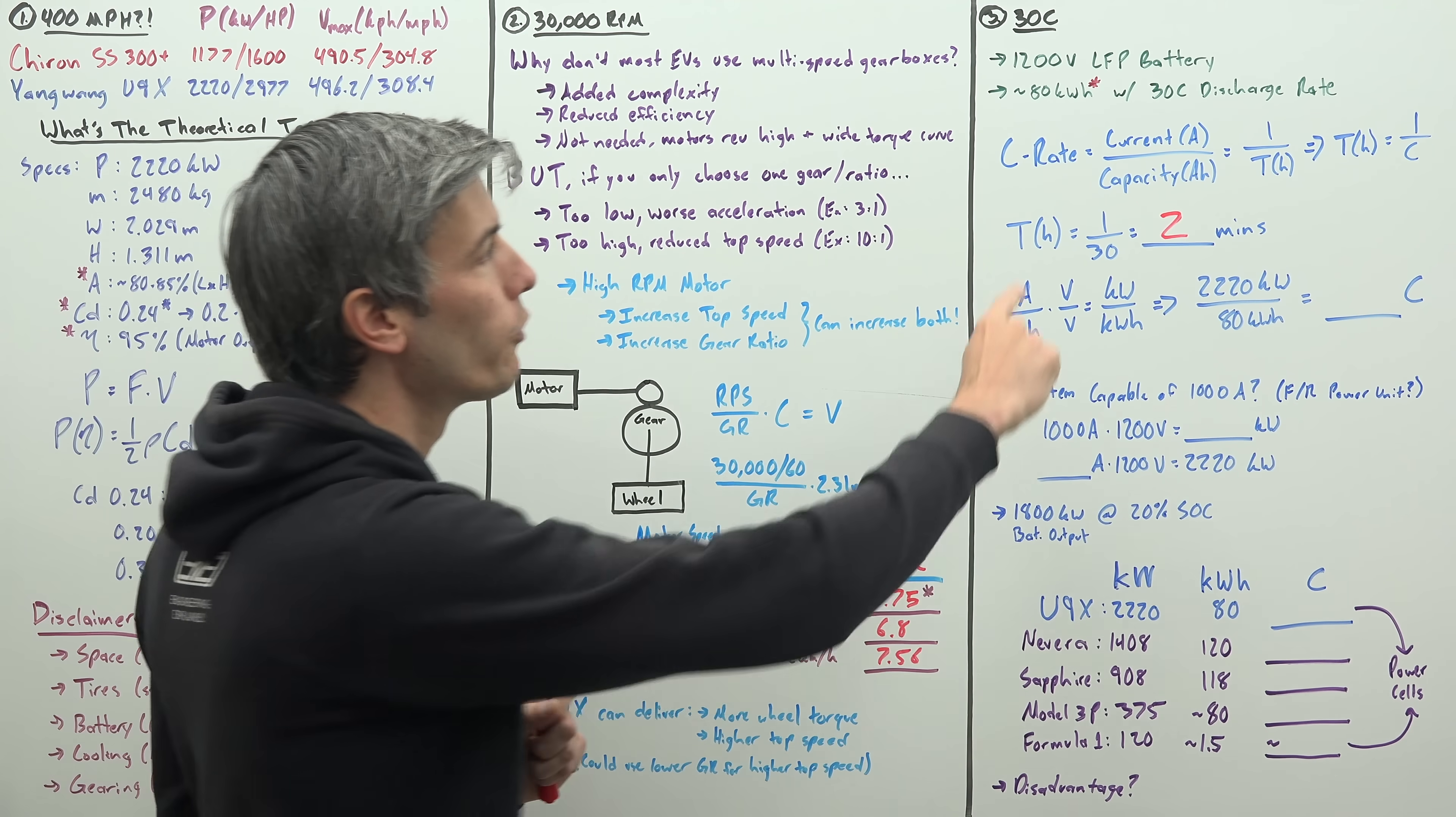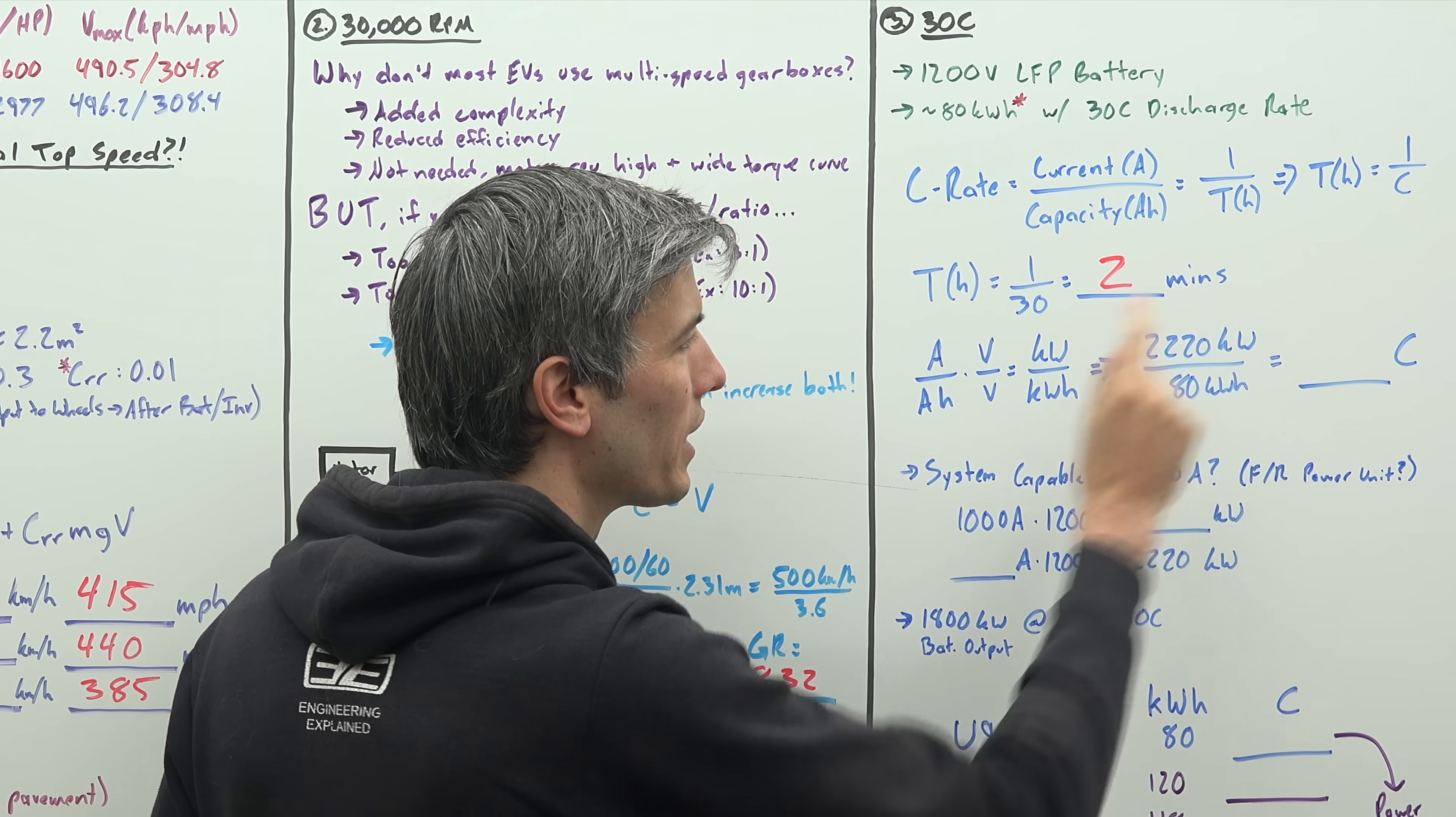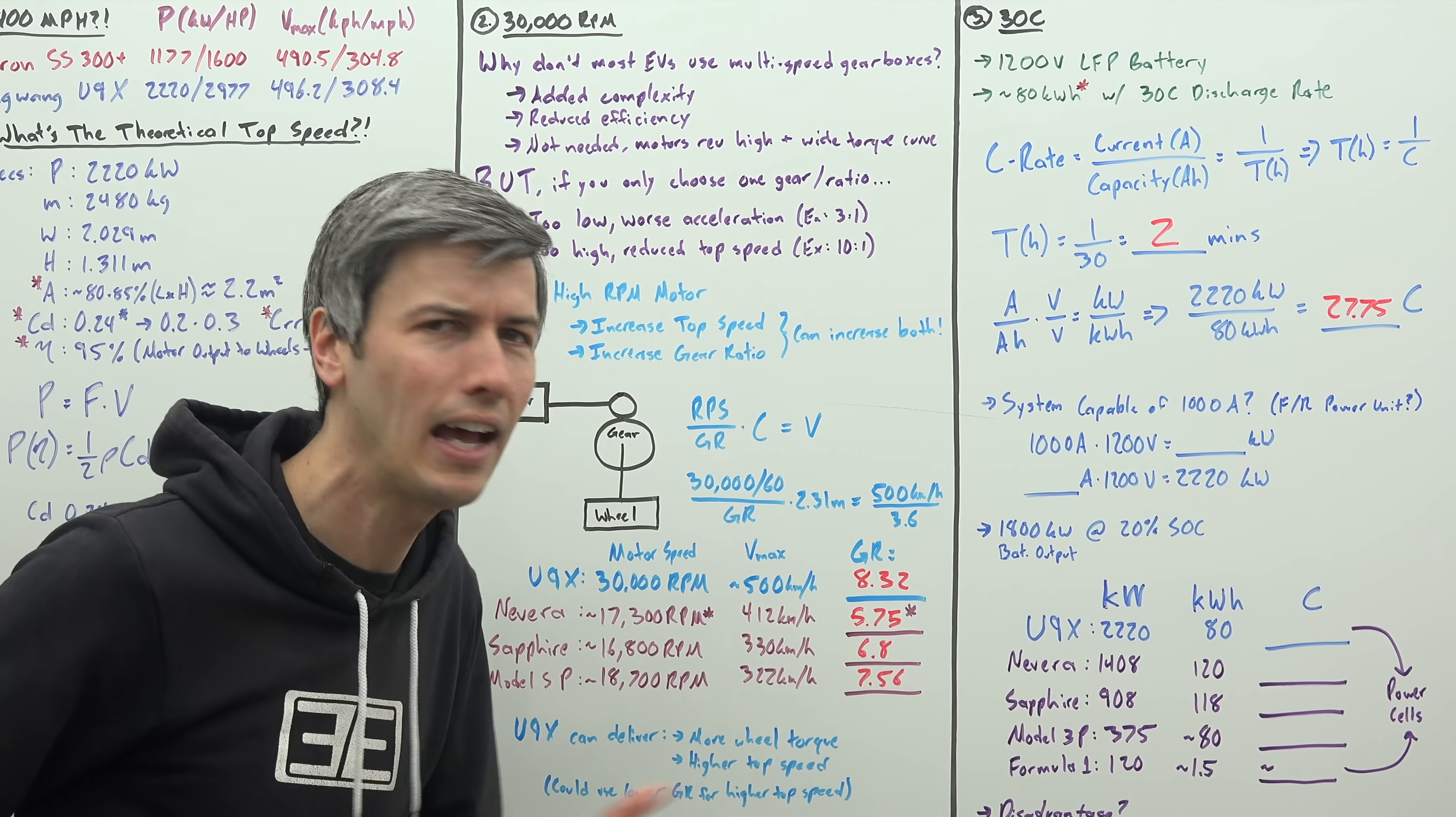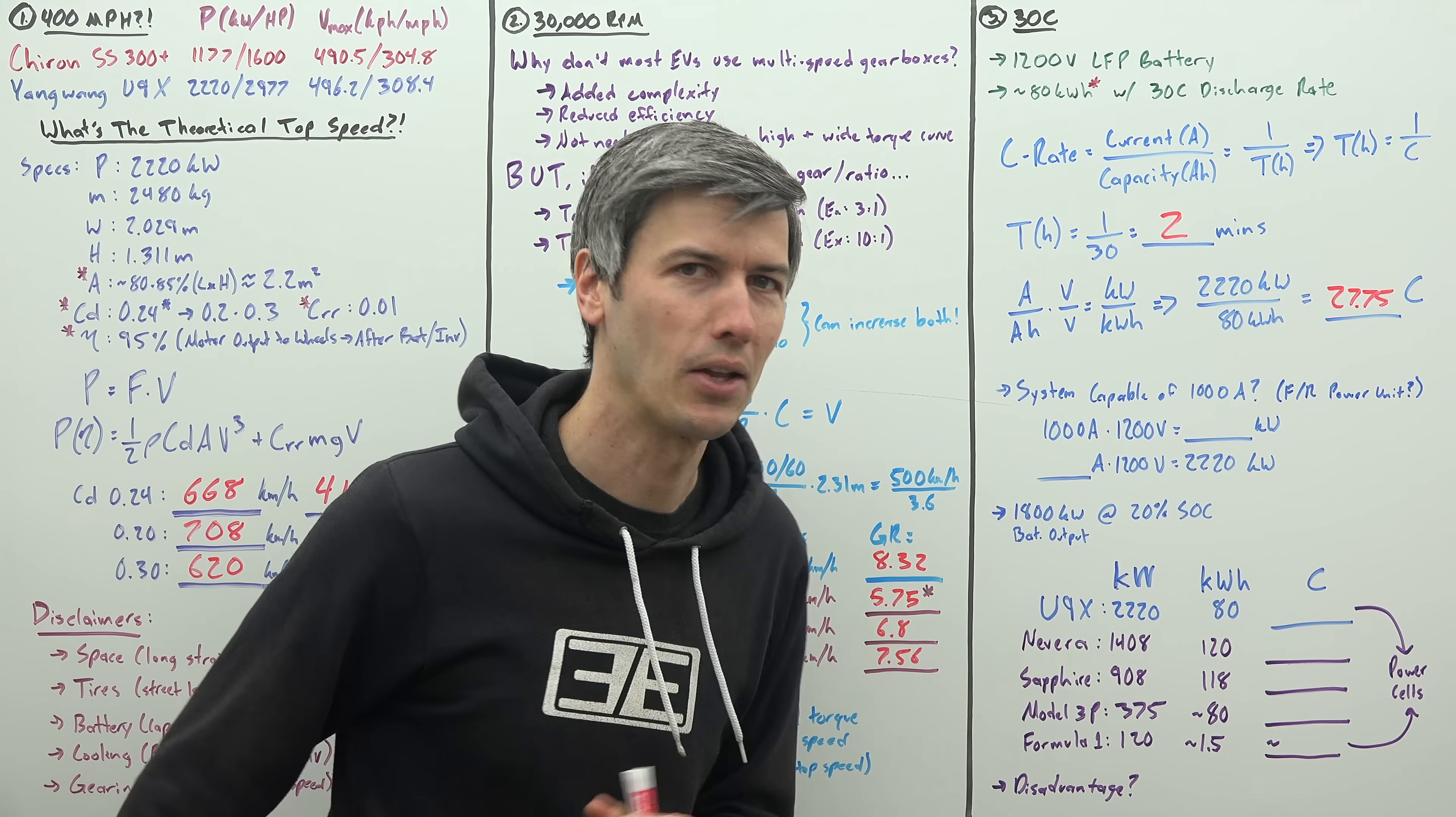Now another interesting thing we can do if we know C rate is amps over amp hours, well if we multiply that by volts over volts, essentially 1, well amps times volts gives you watts, amp hours times volts gives you watt hours. So we know our motors output at 2,220 kilowatts and we know our battery capacity at 80 kilowatt hours. So we do that division and what do we get? A C rate of 27.75. Now that's pretty close to 30, but it's not exactly 30. Now remember this is the motor output. 2,220 kilowatts is the motor output. So in order for it to achieve that, the battery output would actually have to be higher, which means your C rate would actually be slightly higher. So 30 C makes a lot of sense.